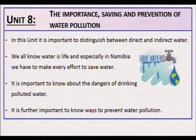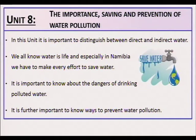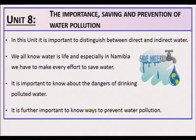Unit 8: The importance of saving and prevention of water pollution. In this unit it is important to distinguish between direct and indirect water use. We all know water is life, and especially in Namibia we have to make every effort to save water. It is important to know about the dangers of drinking polluted water and to know ways of preventing water from pollution.